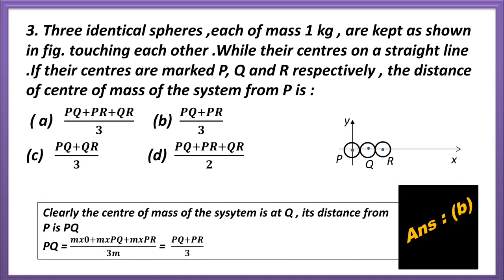Question 3. Three identical spheres each of mass 1 kg are kept as shown in the figure, touching each other with their centers on a straight line. If their centers are marked P, Q, and R respectively, the distance of center of mass of the system from P is — there are four options. The center of mass of the system is at Q; its distance from P is PQ. The position of the center of mass from P is (M·0 + M·PQ + M·PR) / 3M = (PQ + PR) / 3. So the correct answer is option B.